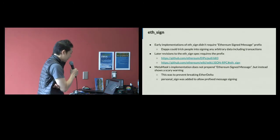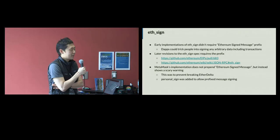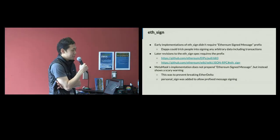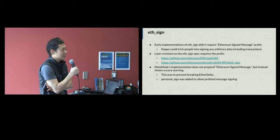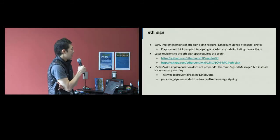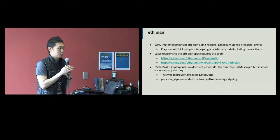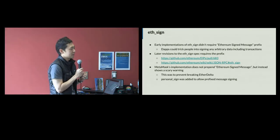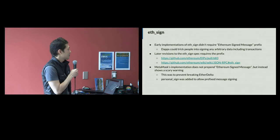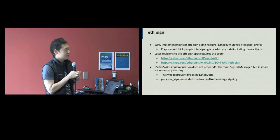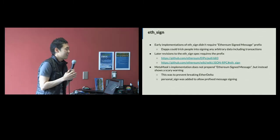The workaround was to use personal_sign, which includes the Ethereum signed message prefix. But people are still to this day using eth_sign. I come across dApps still using it, and MetaMask displays a really scary message saying it's dangerous, you might lose all your money. Yet people have gotten accustomed to just blindly approving and signing messages, because the way it's displayed, what you're signing makes no sense — and since no ETH value is shown being transferred, people think it's fine.